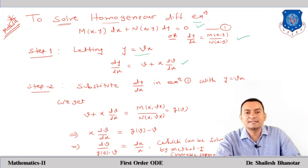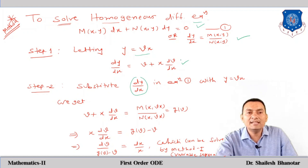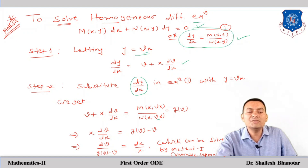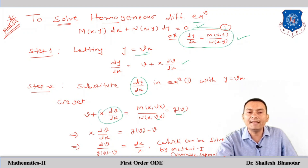Substituting dy/dx = v + x·(dv/dx) into the equation, the right-hand side M(x,vx)/N(x,vx) becomes a function of v only — call it g(v) — because all x terms cancel due to the homogeneous property. So we get x·(dv/dx) = g(v) − v, which is now a variable separable equation and can be solved directly.